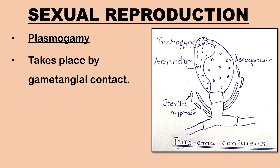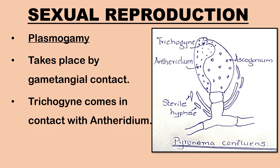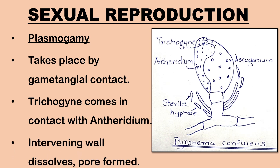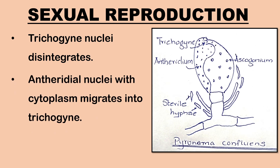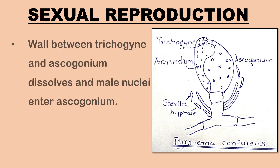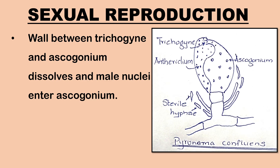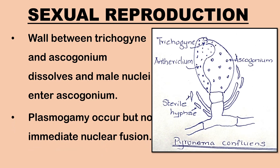Plasmogamy takes place by gametangial contact. The trichogyne grows towards the antheridium, bends, and comes in contact with its apex. The wall at the point of contact dissolves and a pore is formed. The nuclei of the trichogyne disintegrate. The antheridium nuclei, surrounded by some cytoplasm, migrate into the trichogyne. With the disintegration of the wall between the trichogyne and the ascogonium, the male nuclei make their entry into the ascogonium. Plasmogamy takes place but karyogamy is delayed; the male and female nuclei in the ascogonium do not fuse immediately and are arranged in pairs to form dikaryotes.